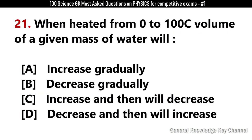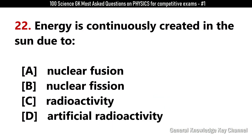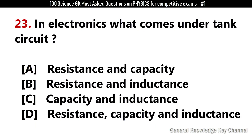When heated from 0 to 100 degrees Celsius, the volume of a given mass of water will? Answer D: Decrease and then increase. Energy is continuously created in the sun due to? Answer A: Nuclear fusion. In electronics, what comes under a tank circuit? Answer C: Capacitance and inductance.